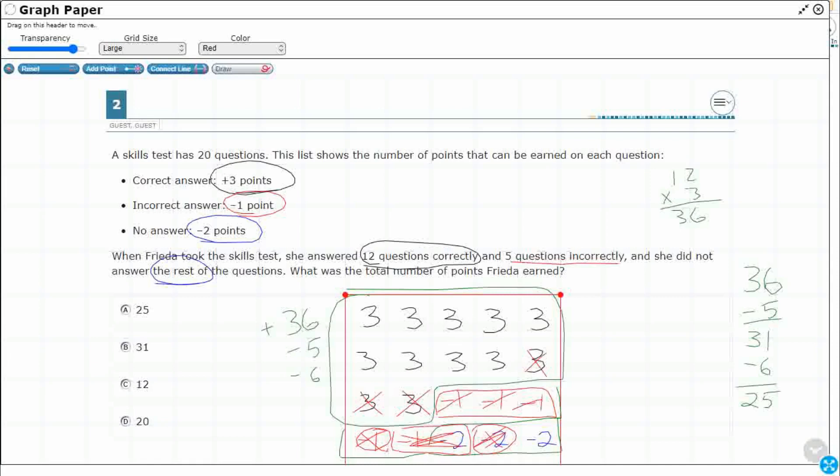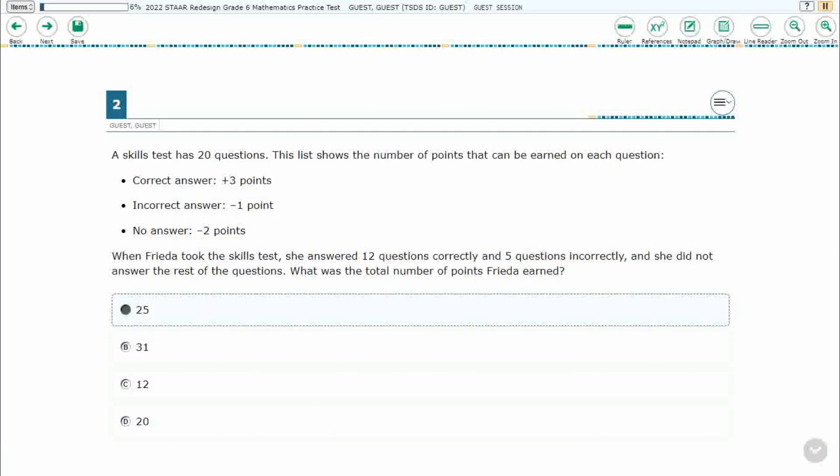3, 6, 9, 12, 15, 18, 21, 24, 27. Take away 2 gets me down to 25. Okay, so that's another way to verify it. My answer here is A.